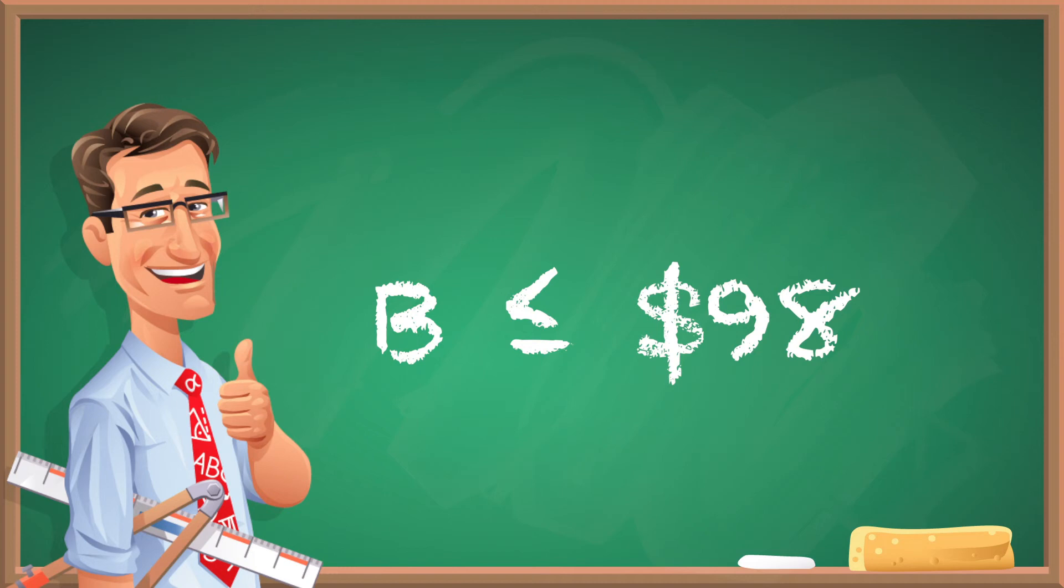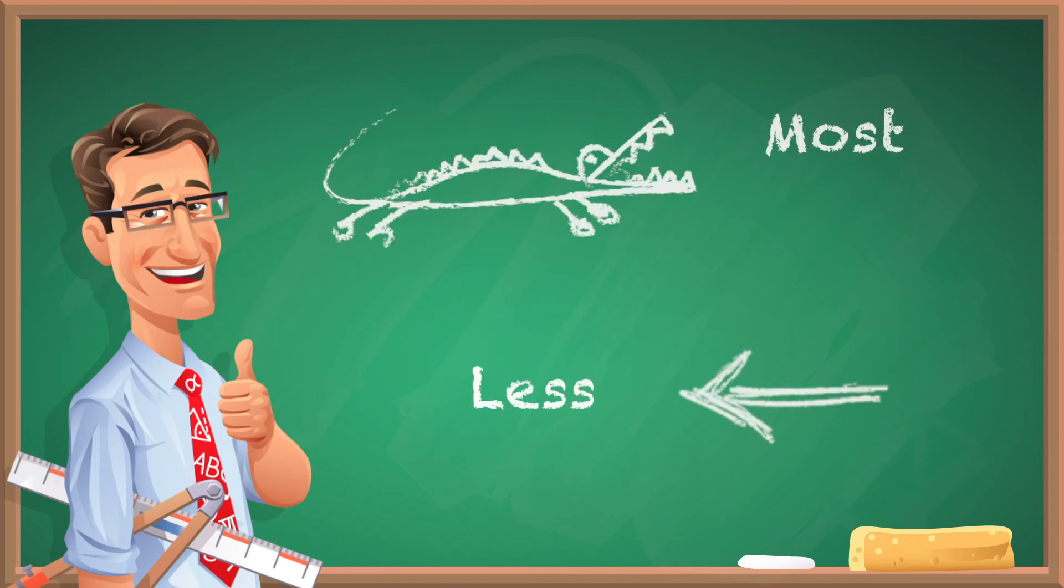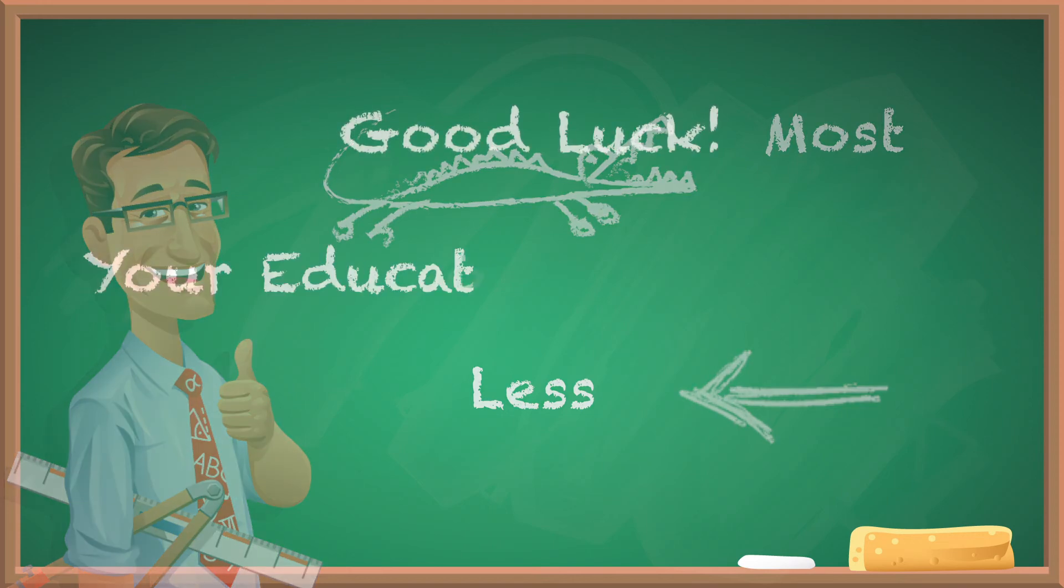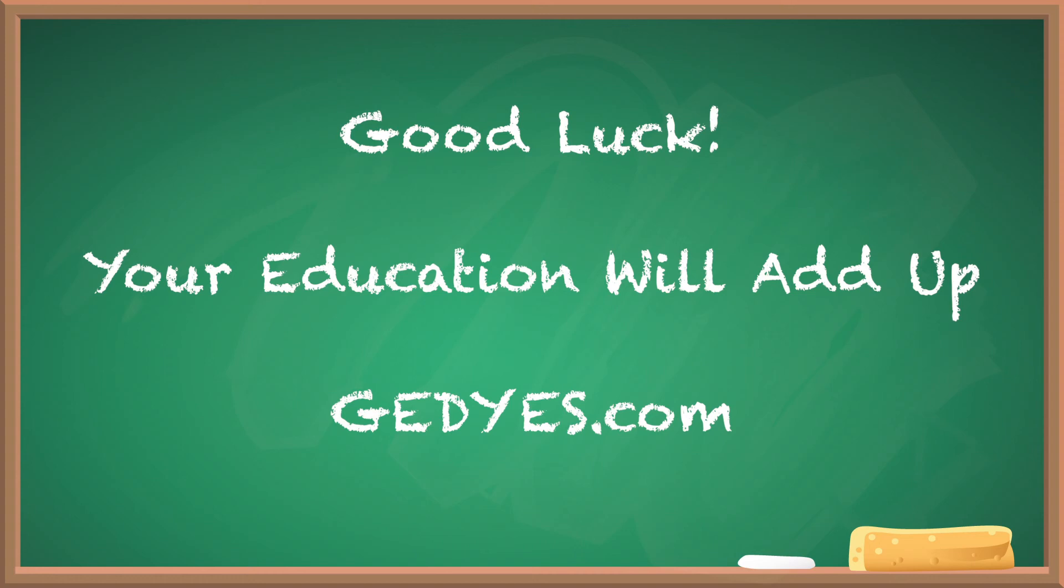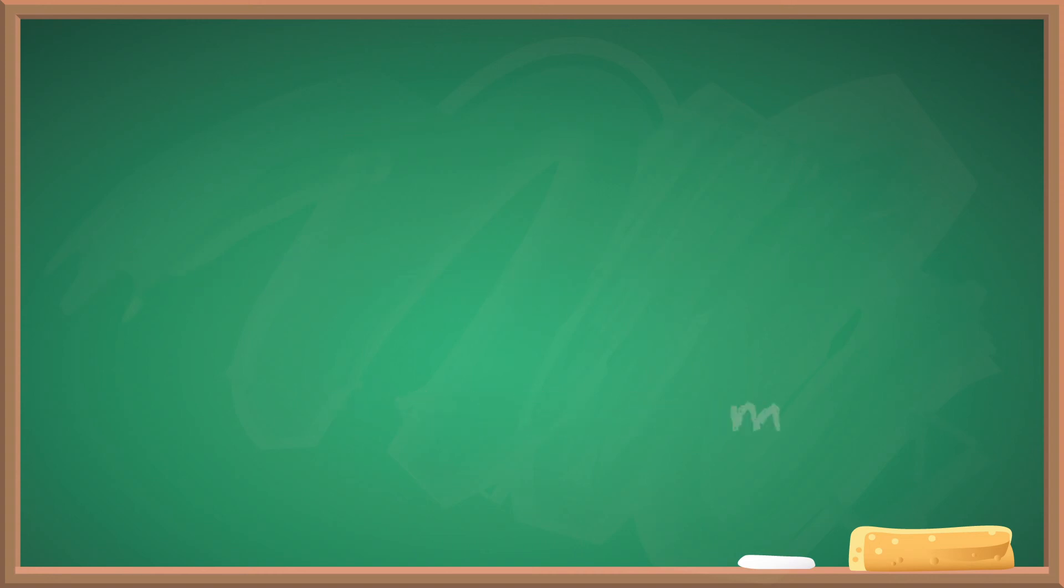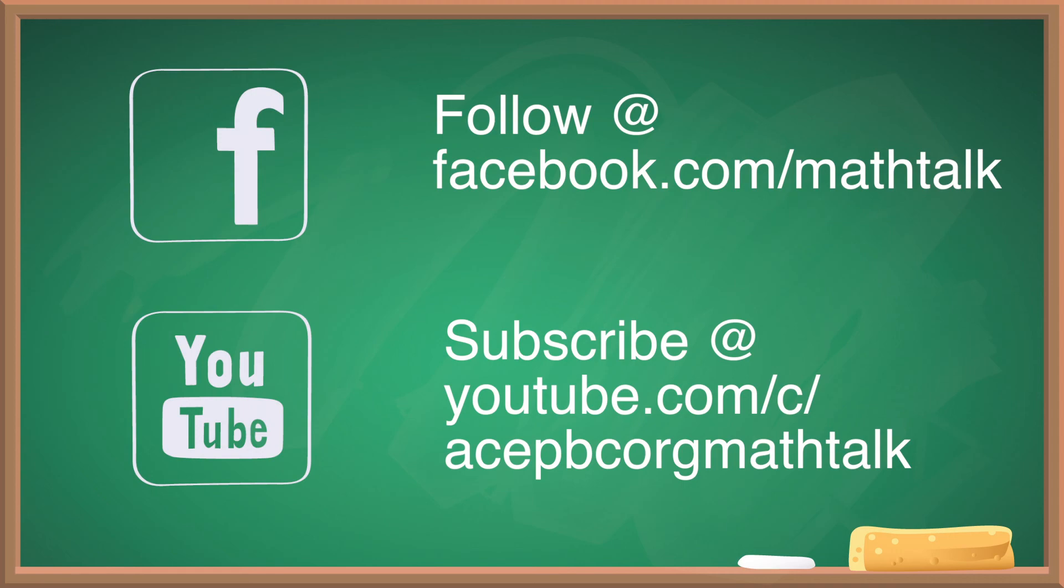So when you're looking at inequalities, just remember: alligator likes to eat what's most, the arrow points to whatever is less. Hopefully this helps out, good luck. Your education will add up when you visit us at GEDS.com. For future tips and videos, be sure to subscribe and follow.